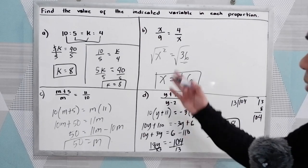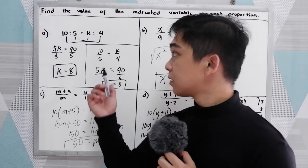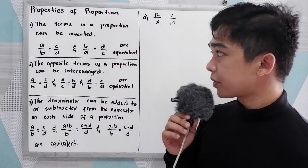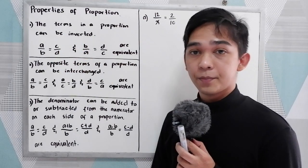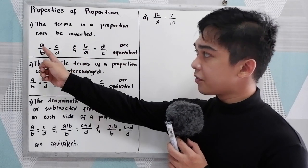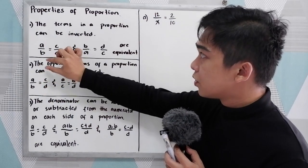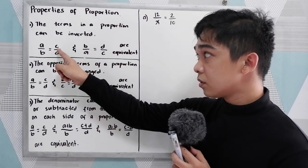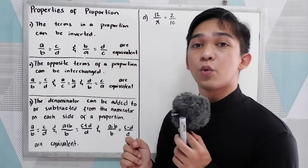Good day everyone. Today I will be discussing the properties of proportions. We have three properties. Property number one: the terms in a proportion can be inverted. So if A over B equals C over D, then inverting gives B over A equals D over C, and they are equivalent. Note that A, B, C, and D must not equal zero.